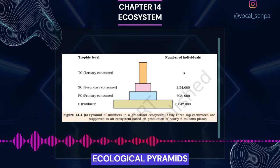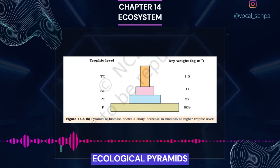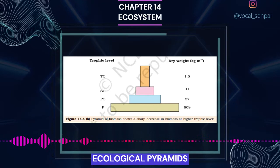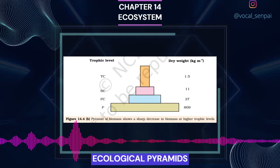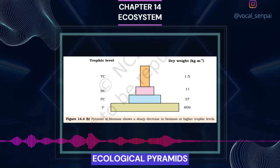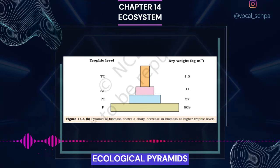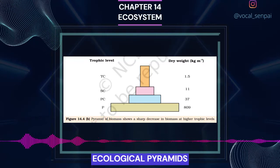Any calculations of energy content, biomass, or numbers has to include all organisms at that trophic level. No generalizations we make will be true if we take only a few individuals at any trophic level into account. Also, a given organism may occupy more than one trophic level simultaneously. One must remember that the trophic level represents a functional level, not a species as such. A given species may occupy more than one trophic level in the same ecosystem at the same time. For example, a sparrow is a primary consumer when it eats seeds, fruits, peas, and a secondary consumer when it eats insects and worms.